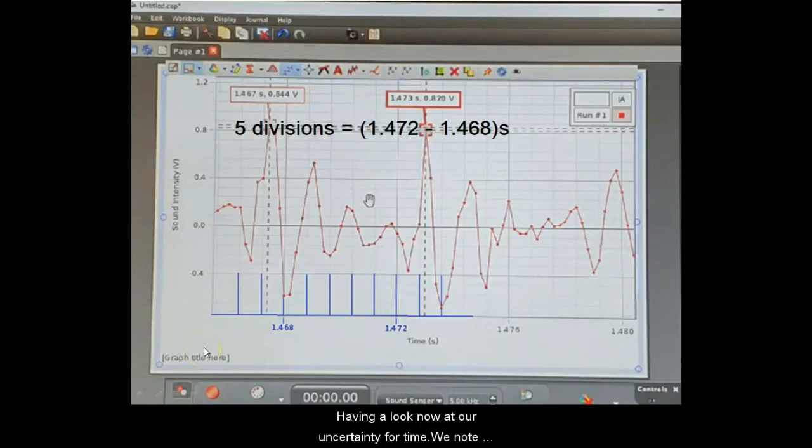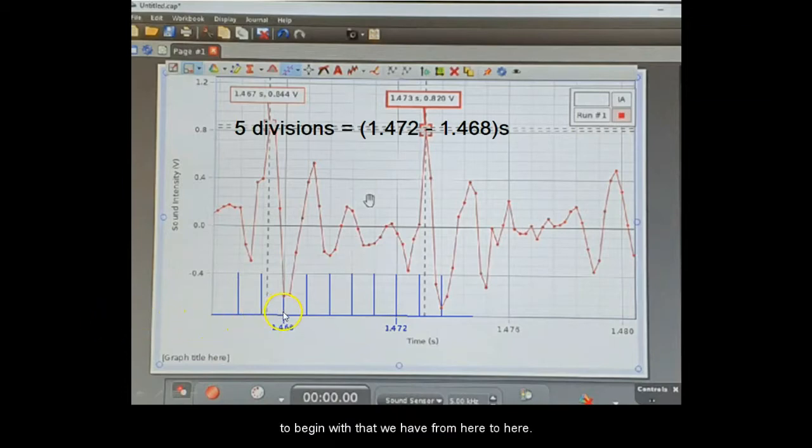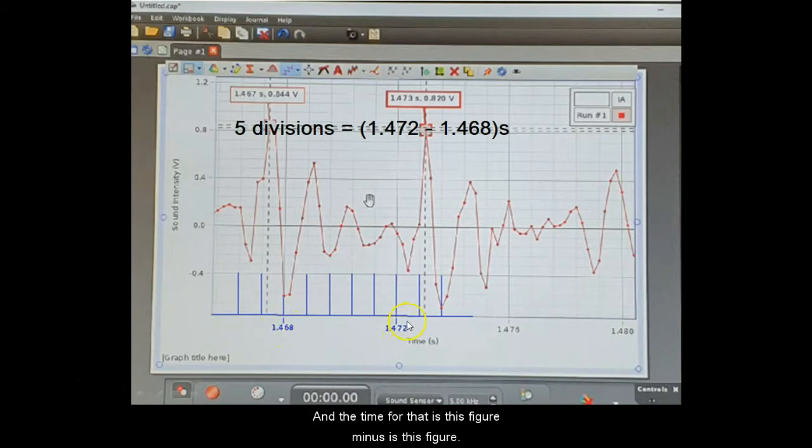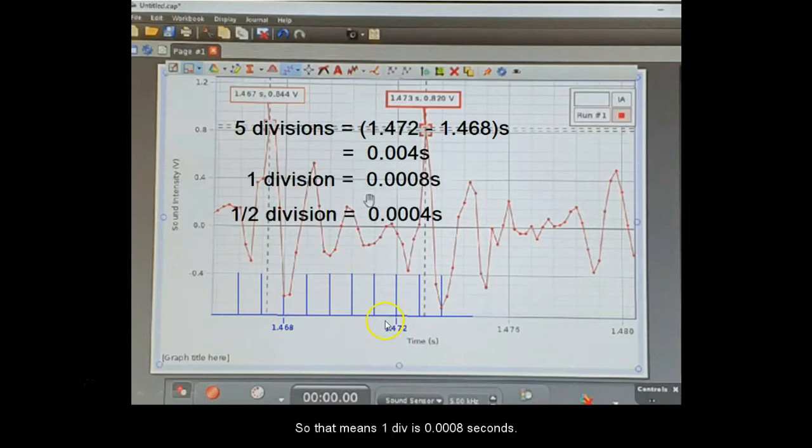Having a look now at our uncertainty for time, we note to begin with that we have from here to here five divisions: one, two, three, four, five. The time for that is this figure minus this figure, in other words, 0.004 seconds. So that means one division is 0.0008 seconds. If we take half a division as being our uncertainty, then our uncertainty is 0.0004.